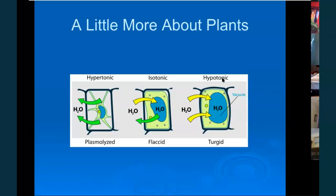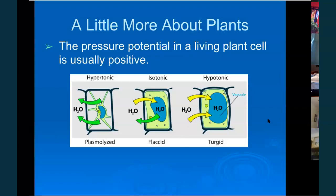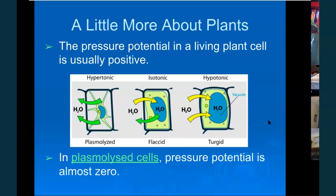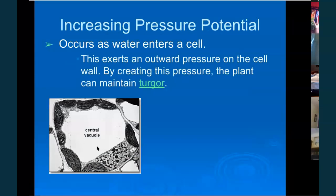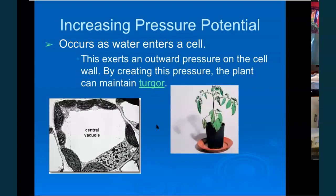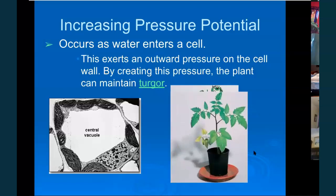Hypotonic means low tonicity, low pulling strength. Water moves away from a hypotonic solution into the cell. The central vacuole in plant cells fills with water, exerting turgor pressure against the walls. You can see the difference in leaves once those cells have turgor pressure — the plant perks right up.